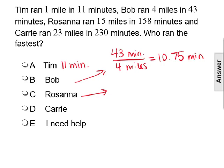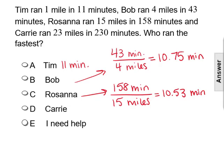Rosanna ran—it took her 158 minutes to run 15 miles. If we divide, that would give a unit rate of 10.53 minutes for 1 mile. So she's even faster.